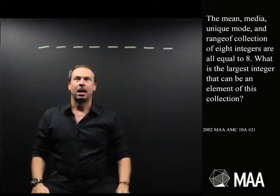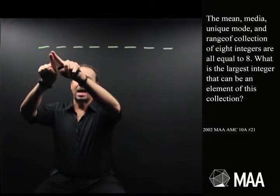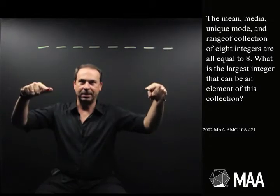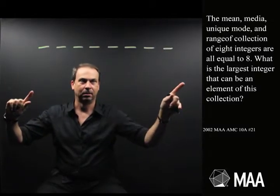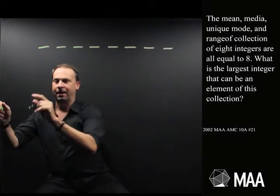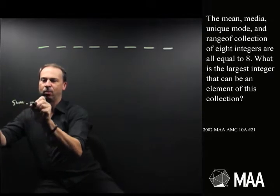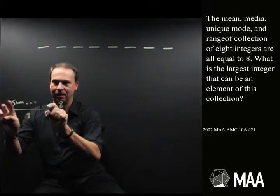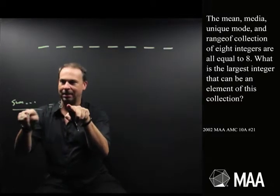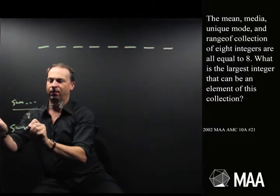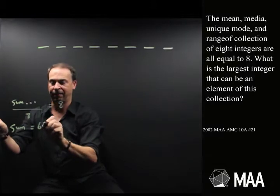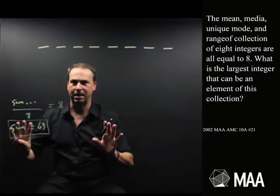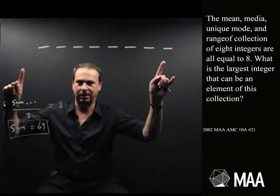Okay, we've got to go through these words. Mean means average. If I add up all the numbers and divide by 8, I get 8. So if I did the sum of all of them, divide by 8, I'd get 8. So if I multiply through by 8, that tells me the sum of all the integers in this list is 64. That's probably a better way to think about it. 8 numbers add up to 64.